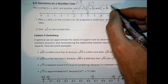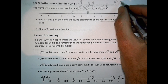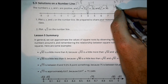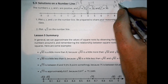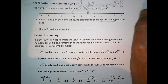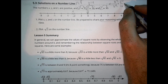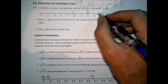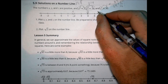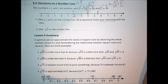For z squared equals 30, something similar takes place. I know 5 squared is 25 and 6 squared is 36. I want to get to 30. So z is going to be between 5 and 6, and since 30 is almost right in the middle between 25 and 36, we put z right about in the middle between 5 and 6.